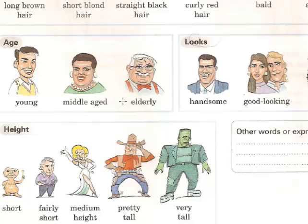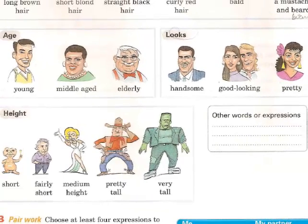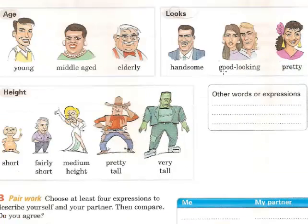Talking about looks, we have: handsome, good-looking, and pretty. When talking about a girl, you say pretty or beautiful. When talking about men, you say handsome. So: he is handsome, she is pretty, she is beautiful, I am good-looking, they are good-looking.